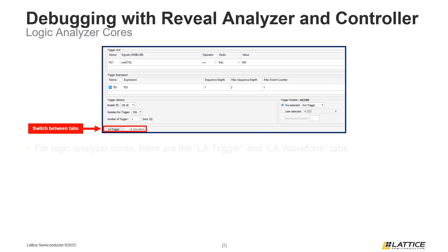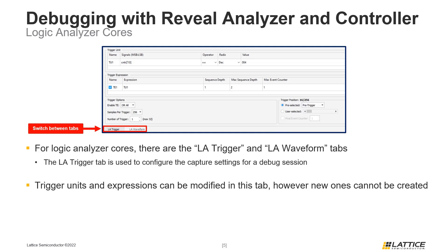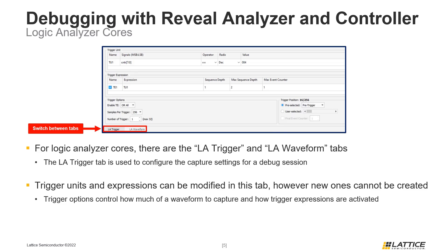Logic Analyzer cores have two tabs in Reveal Analyzer. The first tab, LA Trigger, is the default tab for analyzer cores and is used to configure settings for logic analysis. The content of this window will be similar to the second tab of Logic Analyzer cores in Reveal Inserter and will display the various trigger units and expressions that were set up. Reveal Analyzer can be used to modify some settings for trigger units and expressions, but cannot be used to create new trigger units and expressions.